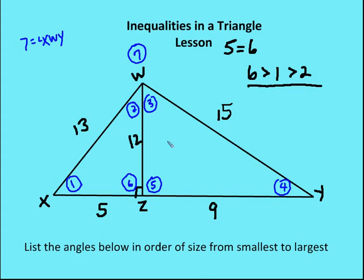Now moving on to the triangle on the right: I see I have a right angle, so five is the greatest — it's the angle opposite the longest side of 15. And then angle four is going to be greater than angle three because the side opposite angle four is 12, which is larger than the side opposite angle three, which is 9. So five is greater than angle four, which is greater than angle three.